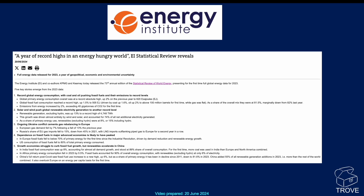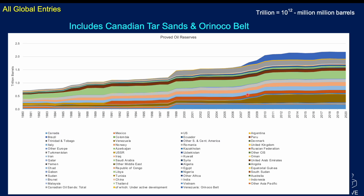Pause the video if you want to read the headlines. We're going to go straight into looking at oil reserves and oil production, starting with reserves. A quick look at all the global entries for reserves — and a trillion is 10 to the 12 barrels, or a million million barrels.